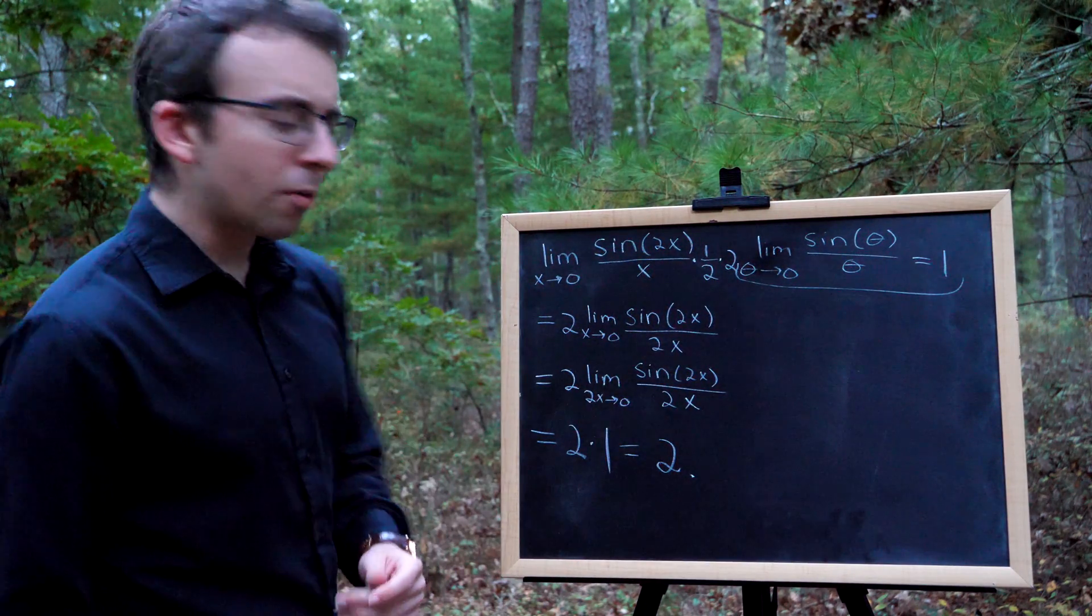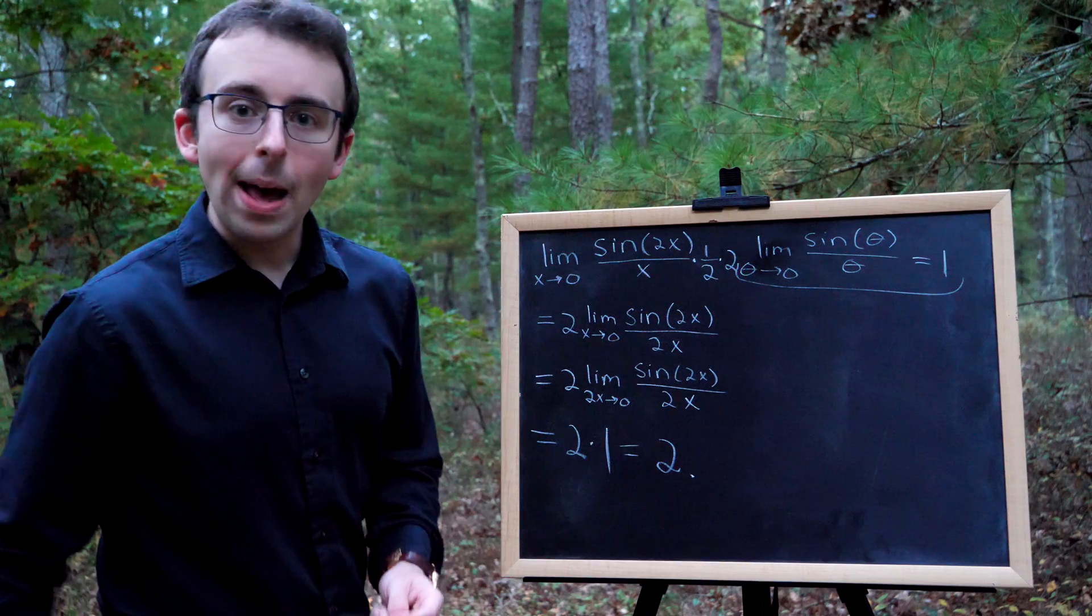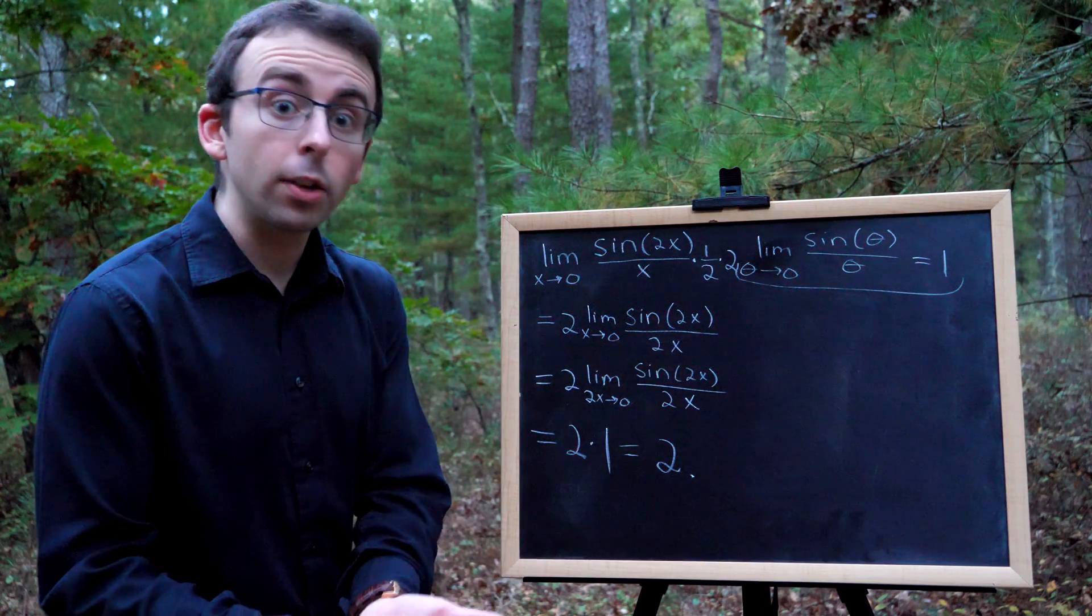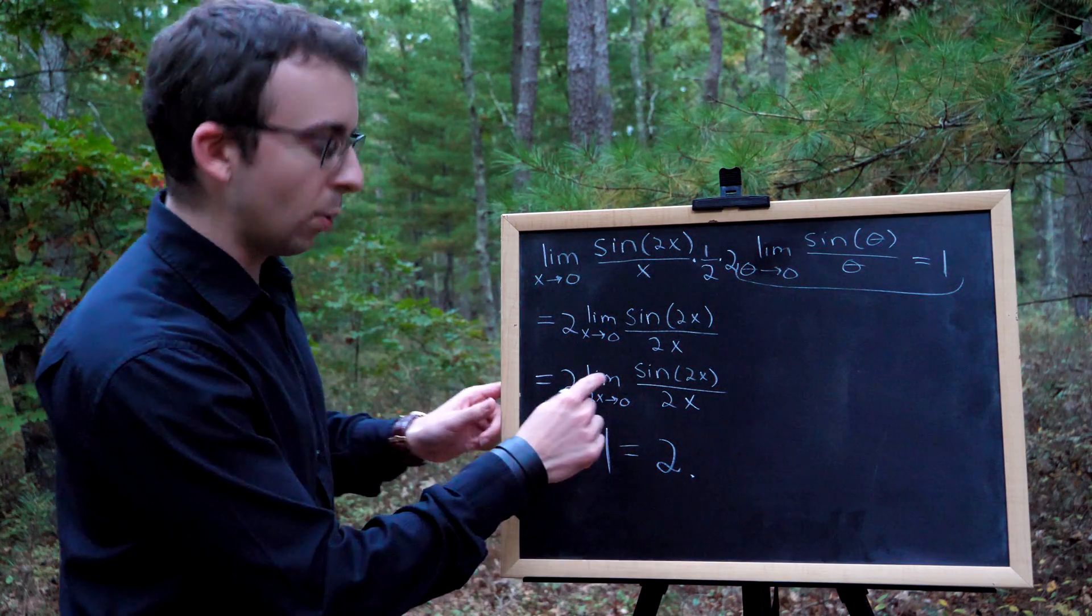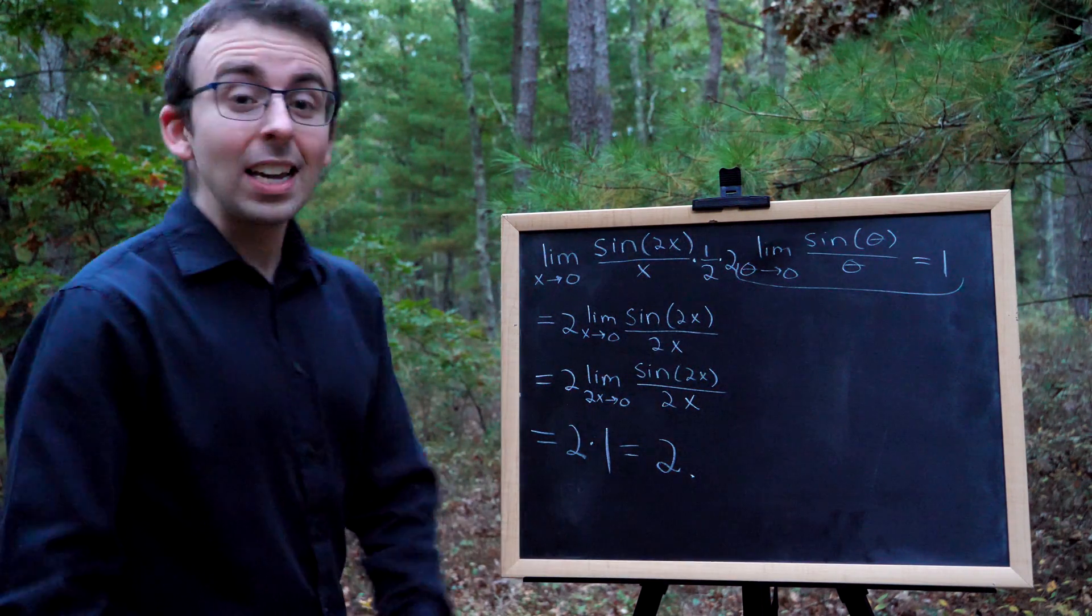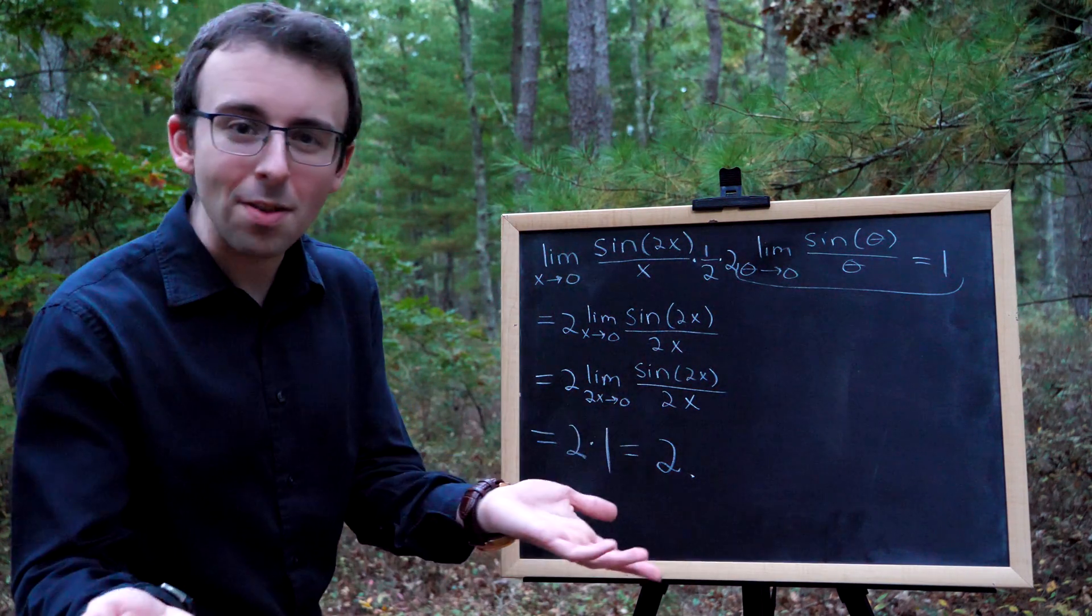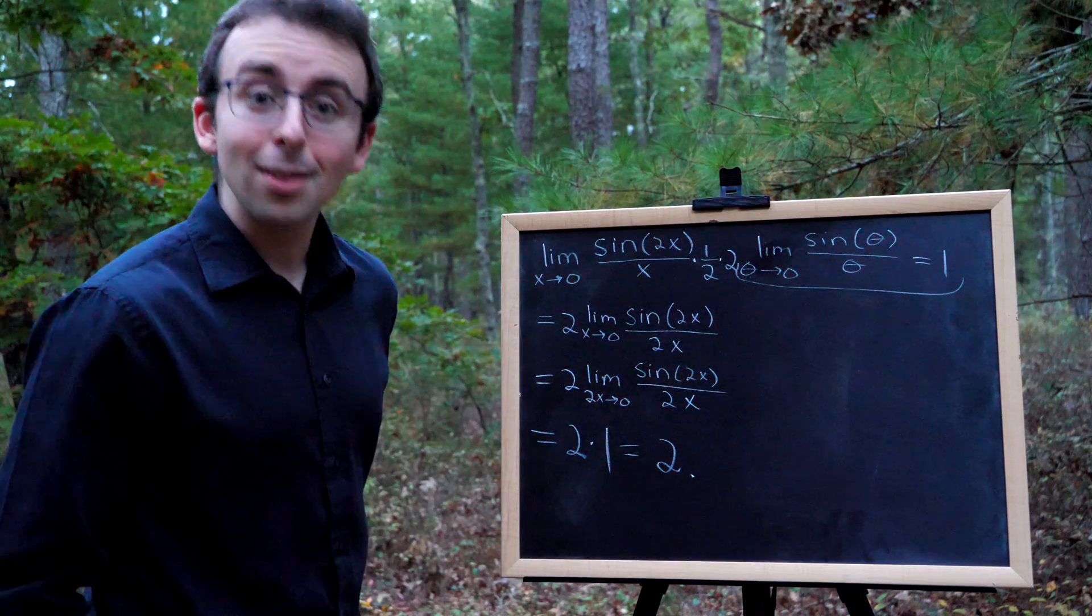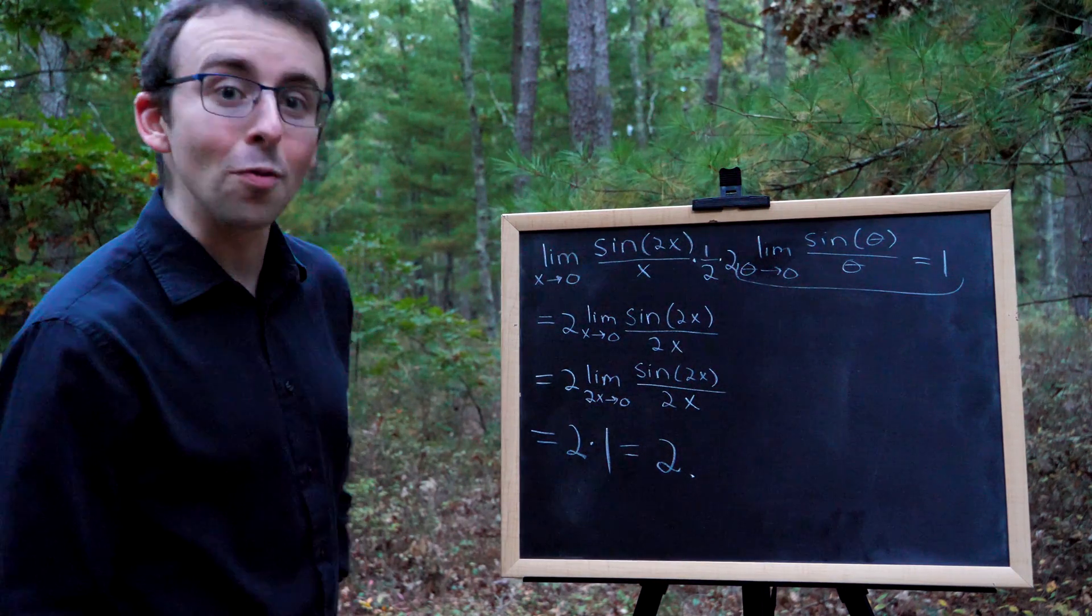And if it made you more comfortable, we could have given 2x a name, like we could have called 2x theta. And then we'd have the limit as theta approaches 0 of sine of theta over theta. It'd be the same thing. You might prefer that. I prefer this because it's simpler. We didn't have to introduce a new variable.